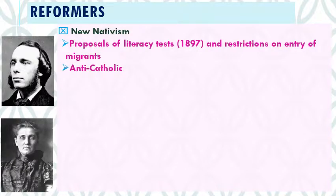Many of these nativists were explicitly anti-Catholic, since a lot of the migrants were Italian Catholics, Catholics from Greece, or Catholics from Eastern Europe. Some were also anti-Semitic, because many Russian and Polish migrants were Jewish. One reform solution was simply to stop the migrants altogether.